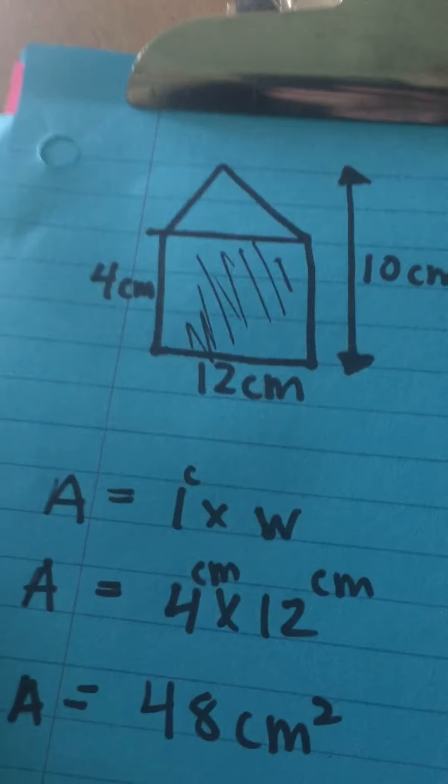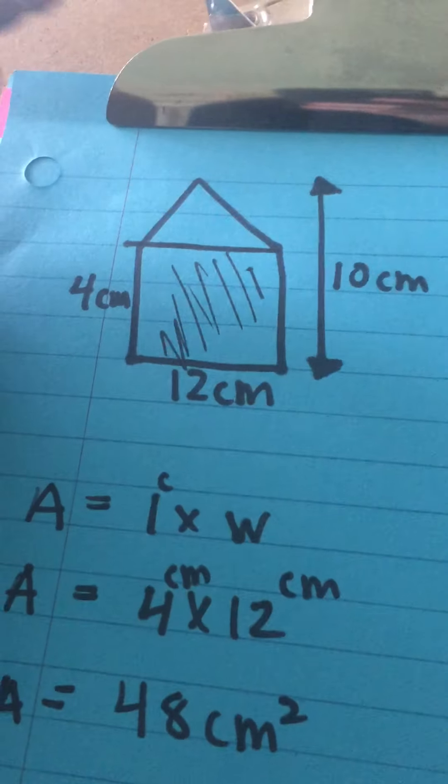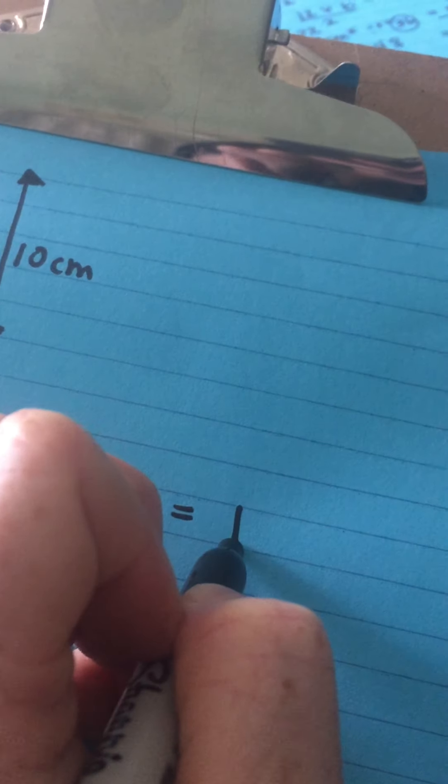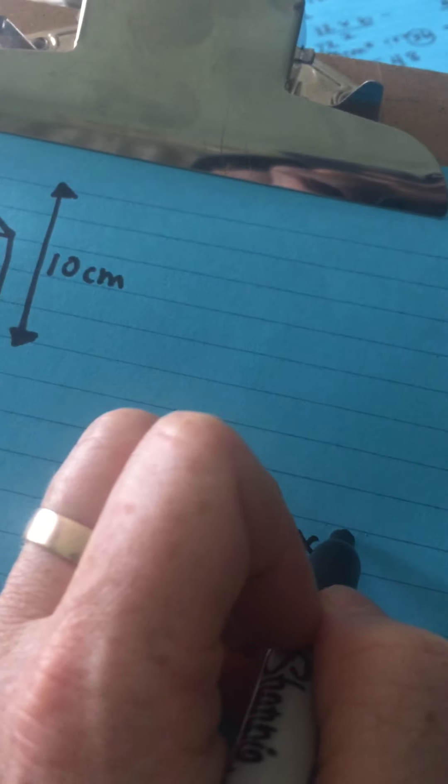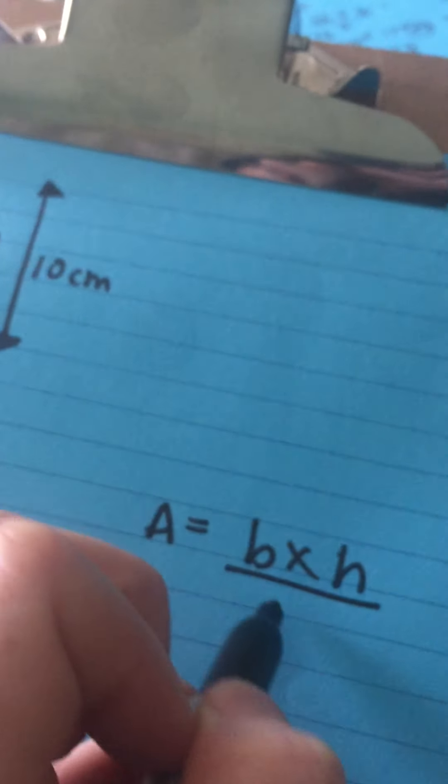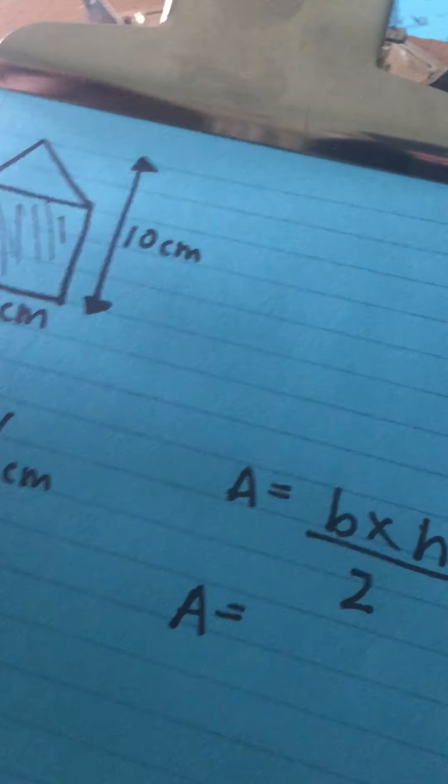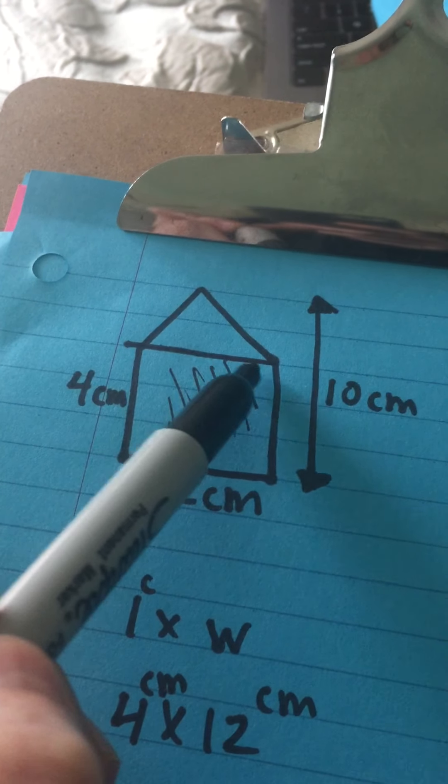Okay, now we need to find the area of this triangle here. The area of the triangle - we remember, how do you find the area of a triangle? Does anybody remember? Area equals base times height divided by two.